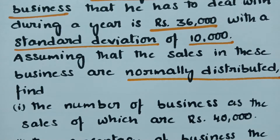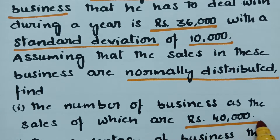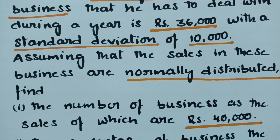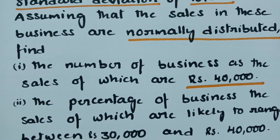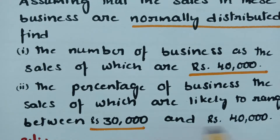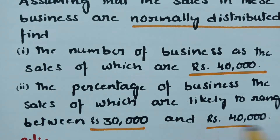We have to find: first, the number of businesses whose sales are above rupees 40,000; and second, the percentage of businesses whose sales are likely to range between rupees 30,000 and rupees 40,000.